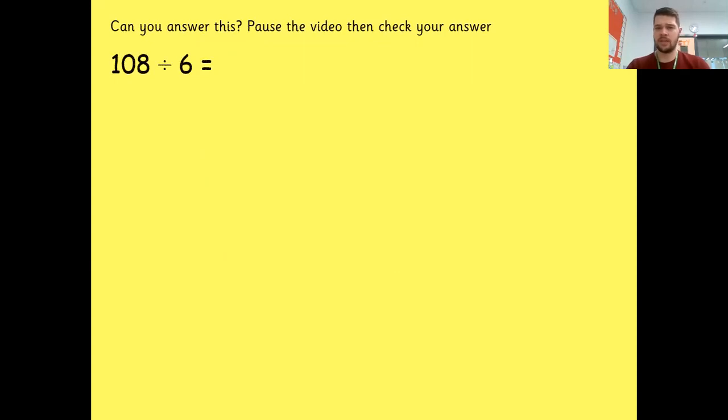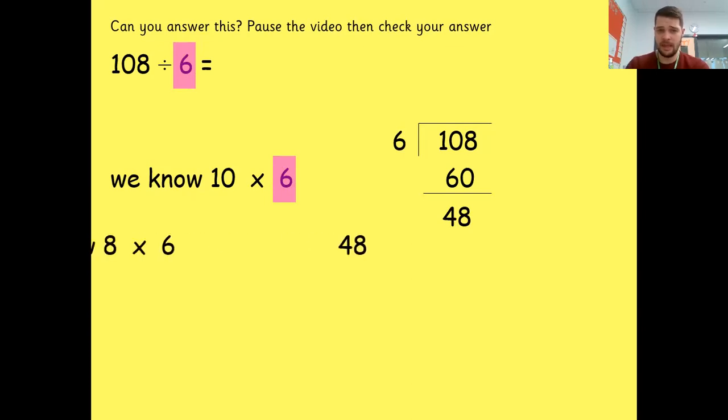Okay, so can you answer this one just before I set you off on all of your tasks? Pause the video here, see if you can use the chunking method for this question, and then resume once you've finished and you want to check your answer. Okay, you may have used different chunks to the one that I'm going to use. But I use 10 times six again to begin with. Give me 60. And then I use column subtraction to find 48. And then I know that six times eight is 48. So I used another eight groups of six. I'm going to circle my groups 10 and eight gives me 18. So 108 divided by six is 18.